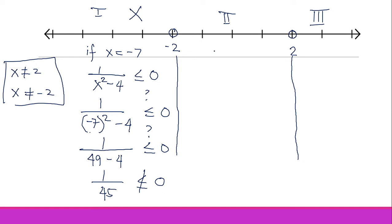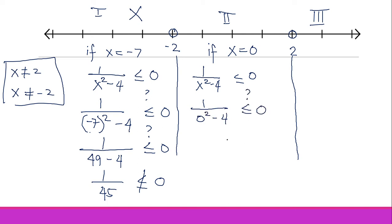For Region 2, values of x include −1, 0, and 1. Let's pick x = 0. Plugging into 1 over x² minus 4: one over 0² minus 4 gives 1 over −4, which is −1/4. Positive over negative always gives a negative result, and −1/4 is indeed less than zero — so Region 2 is TRUE and part of our solution.